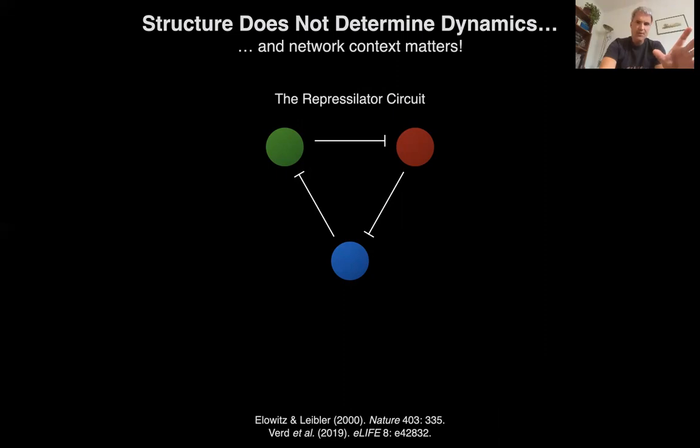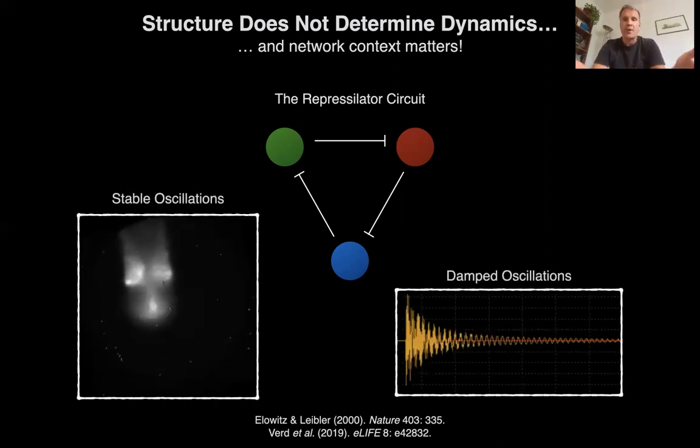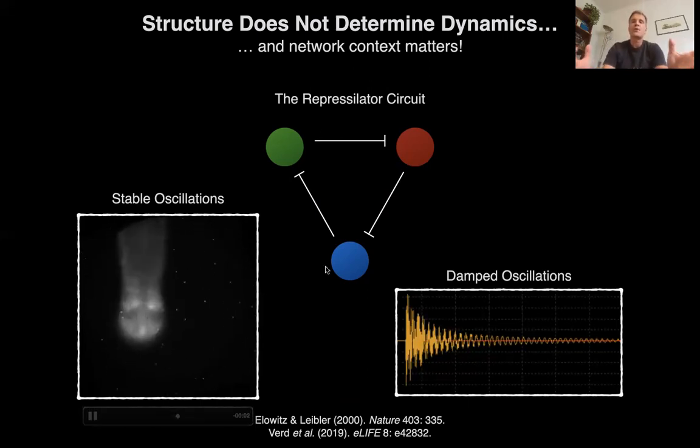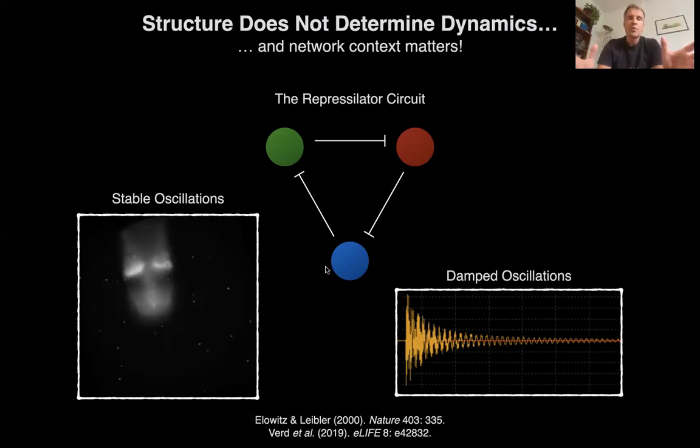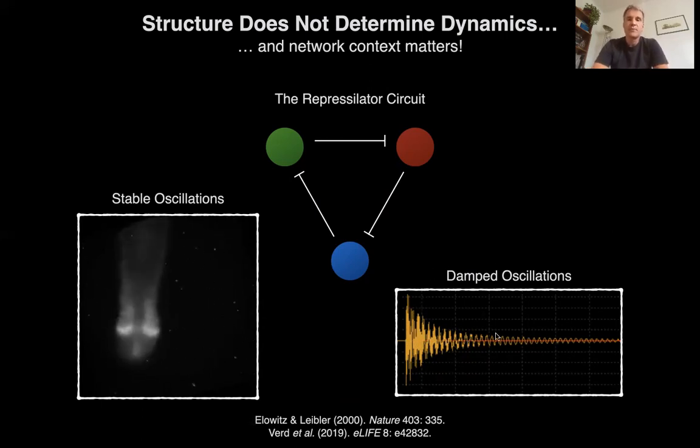And so, what it does, you can model it very exhaustively. What it does, it can do two things. It can oscillate. What I'm showing you here is a mouse presomitic mesoderm, doesn't matter, but you can see oscillating pulses of gene expression. So, this circuit can produce sustained, stable oscillations. It goes on oscillating on and on and on. Or, depending on the strength of the interaction, it can produce an oscillation that will go away after a while. This is called a damped oscillation.